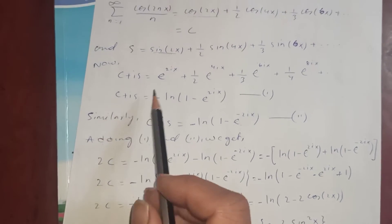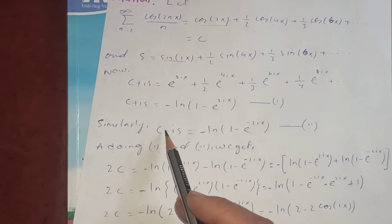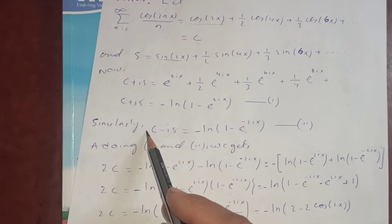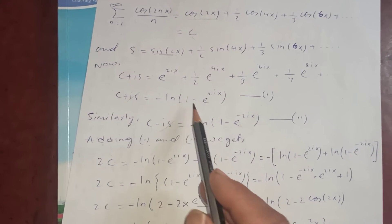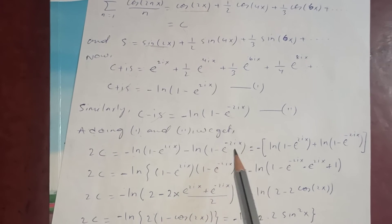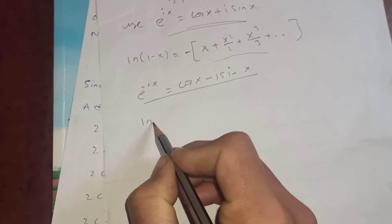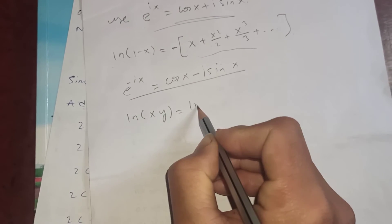Since we want C, and when we add the two equations the iS terms cancel, we get 2C equals minus log(1 - e^(2ix)) minus log(1 - e^(-2ix)). Taking minus as common, this becomes minus [log(1 - e^(2ix)) + log(1 - e^(-2ix))].